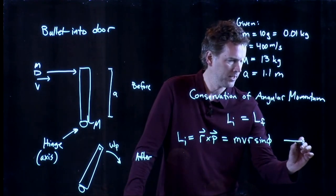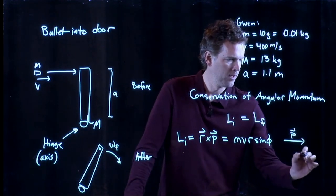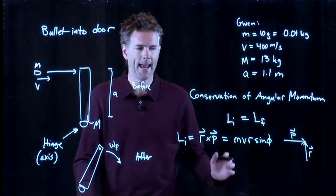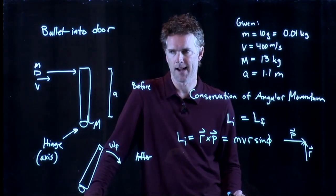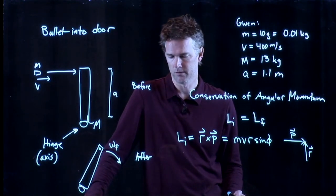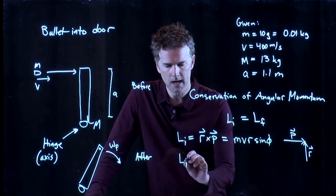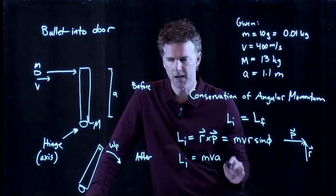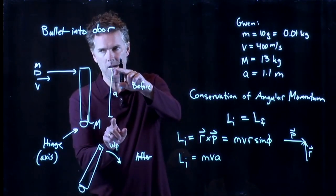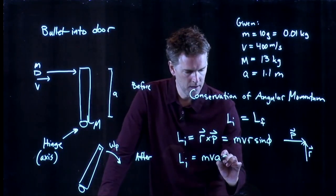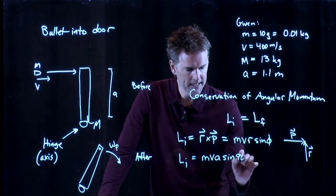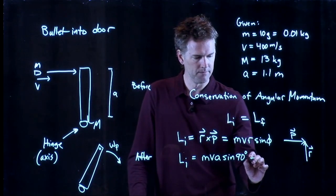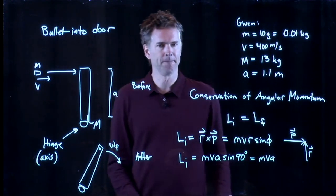And we know what angular momentum is. Angular momentum is R cross P. That's how we write it with the cross product. Or we write it MVR sine phi. Mass times speed times the radius times the angle between R and P. So for the bullet, it's moving to the right. The radius is just the door itself. That angle between them is in fact 90 degrees. So we get LI equals MV. In this case, the radius is just a, the length of the door. The sine of 90 degrees is 1. And so we just get MVa.